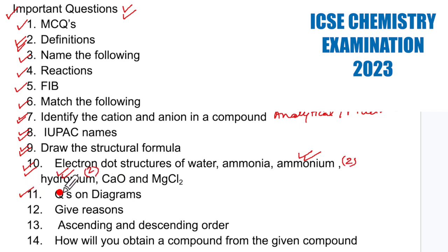Then we come to the next type of question is questions on diagrams. Now this is mostly when you have electrolysis. They will give you the diagram for electrolysis of dilute sulfuric acid or acidified water or it can be the study of compounds where we have the preparation of different compounds. Now in study of compounds we have ammonia, we have HCl, we have HNO3 and we have H2SO4.